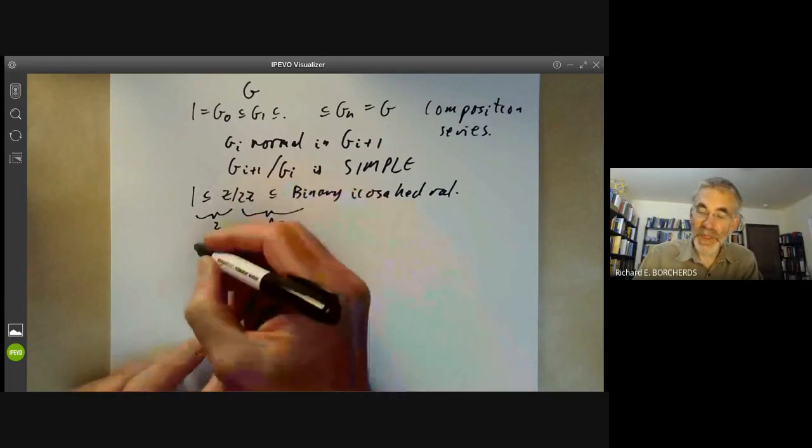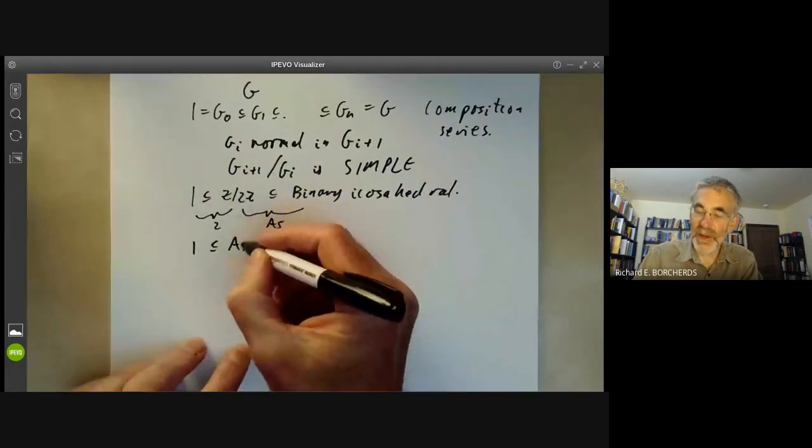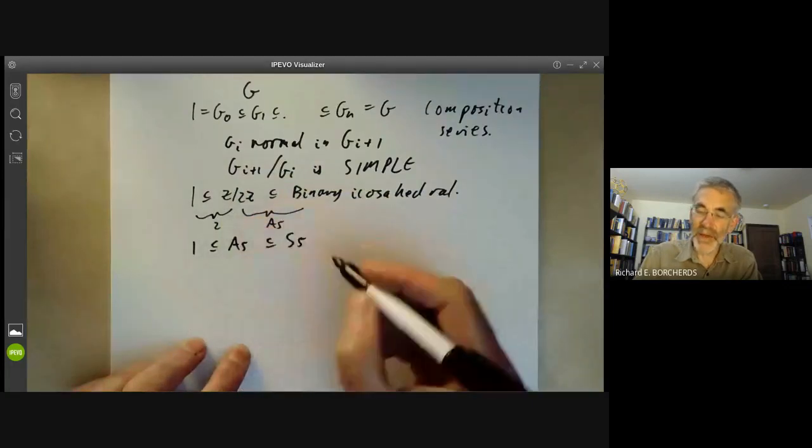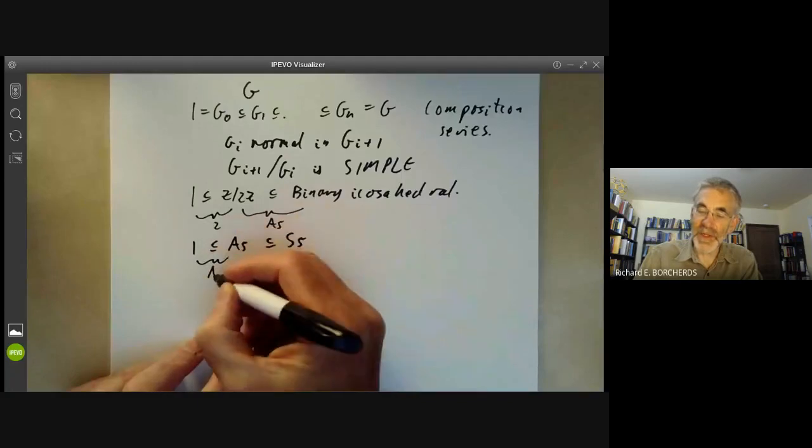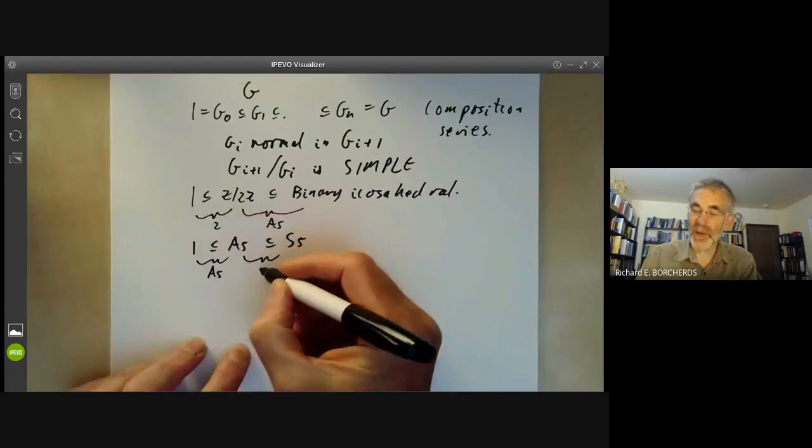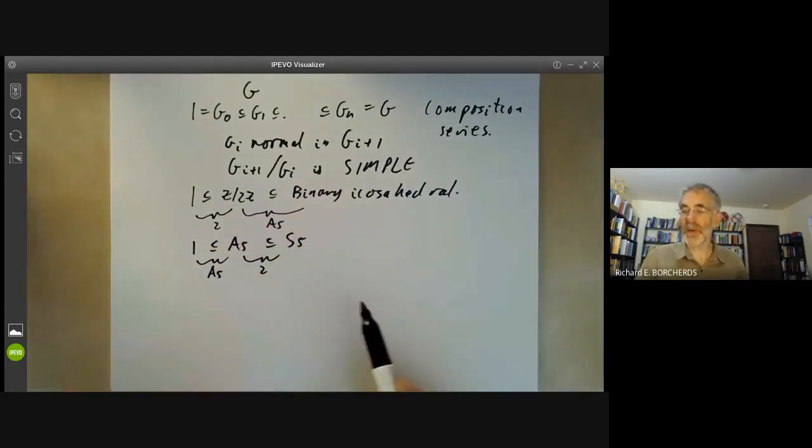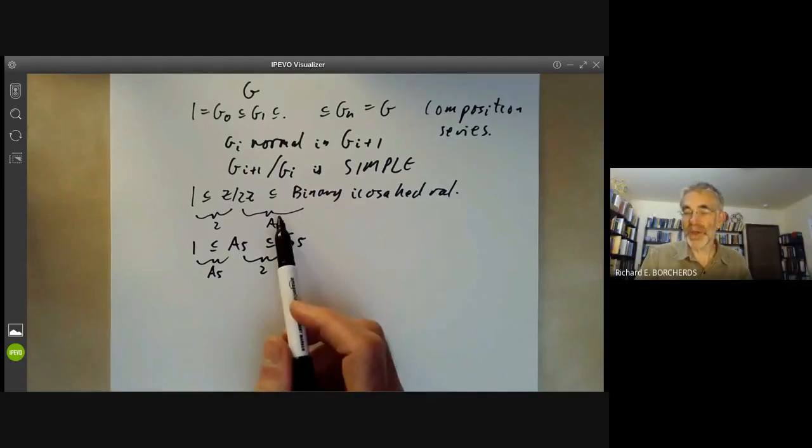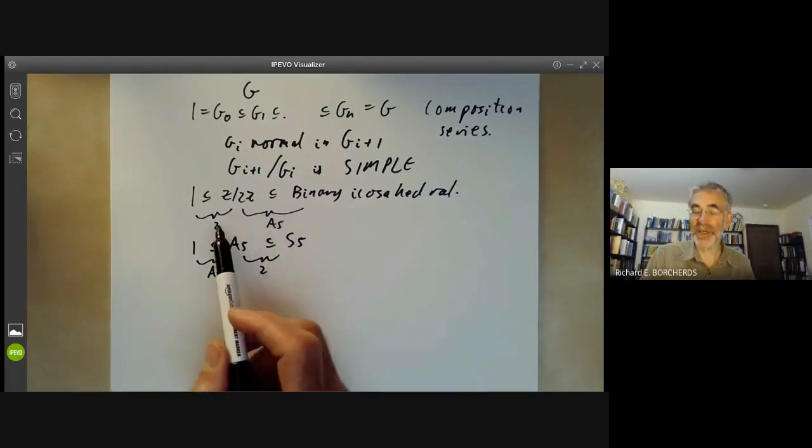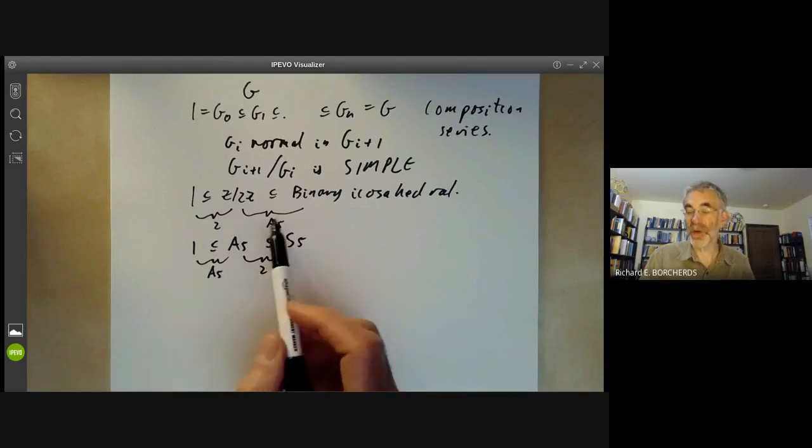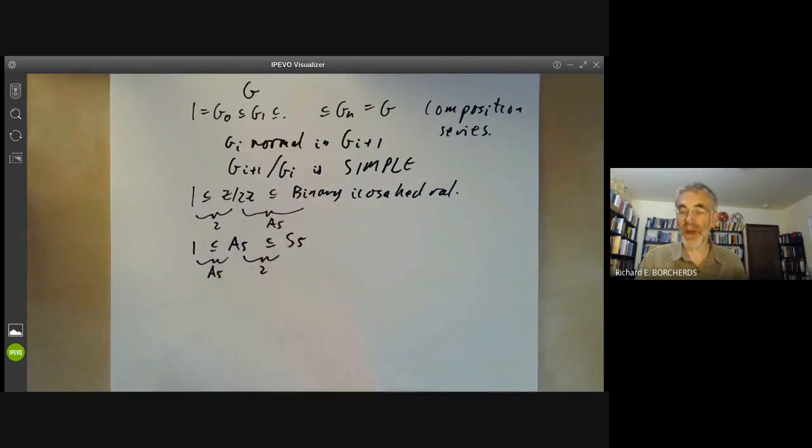Another group was the symmetric group S5, and this has a composition series which looks like this. So this time, this quotient is the group A5, and this quotient is order two. So you see we have two groups with two composition series, and each composition series has a group of order two and the group of order A5, only they're put together in different ways.